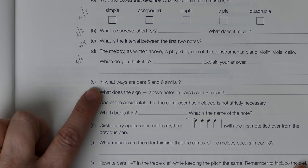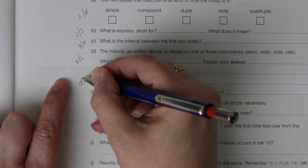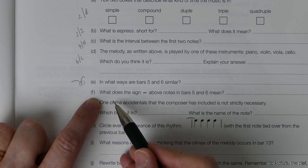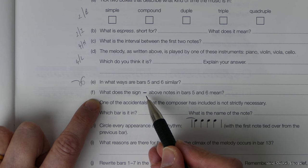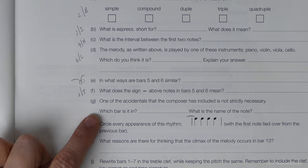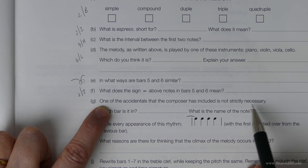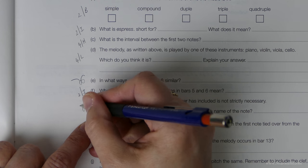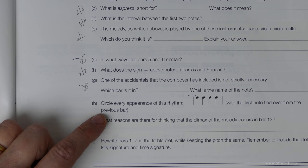Next question is just a little observational question. We need to look and find some similarities between those bars, just some general similarities. We have this sign here, and this performance direction was mentioned in grade 2, section I. One of the accidentals that the composer has included is not strictly necessary, so you've just got to keep your eyes peeled there.